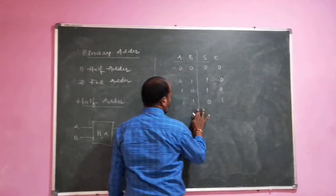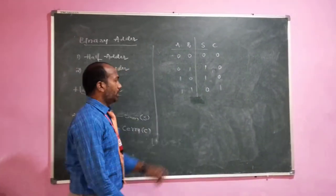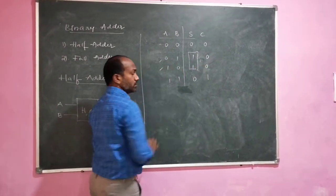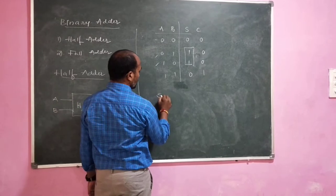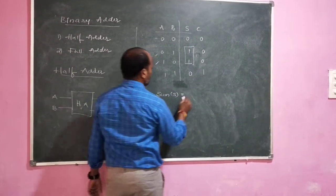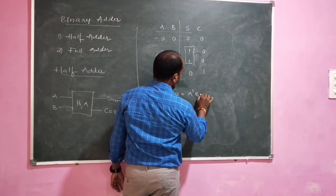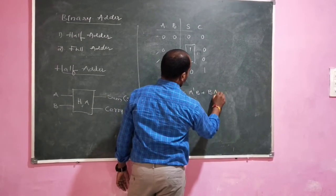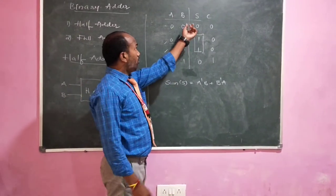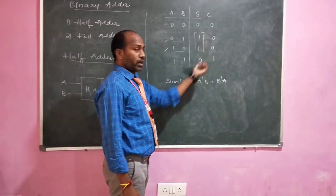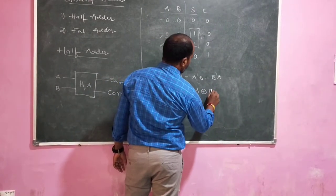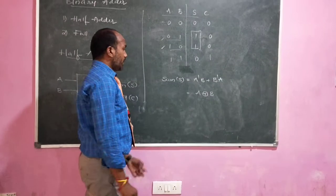Now, writing the equation for sum and carry: sum S is equal to A-bar·B plus A·B-bar, because only for these two combinations is the output sum equal to 1. So we can say this is A XOR B — this is the equation for the sum.